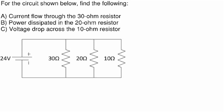Let's take a look at the parallel circuit shown. We're asked to find the current flowing through the 30 ohm resistor, let's call that R1, the power dissipated in the 20 ohm resistor, we'll call that resistor 2, and the voltage drop across the 10 ohm resistor, R3.